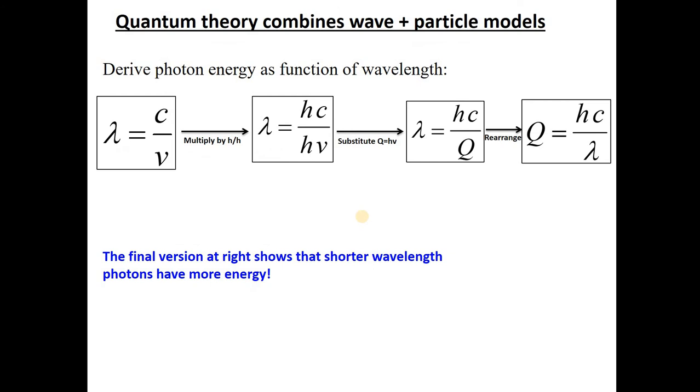So we can actually combine the wave model and the particle model mathematically just by using the equations I just showed you. So here is the first equation I showed you. If we multiply this by Planck's constant over Planck's constant, or h over h, then we substitute the particle equation that I just showed you Q equals hν, we're going to sub that in for hν right here. That gives us this statement.